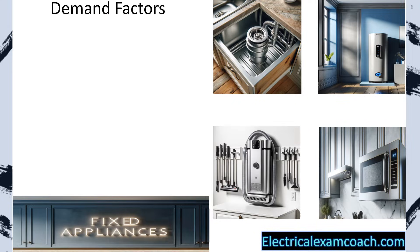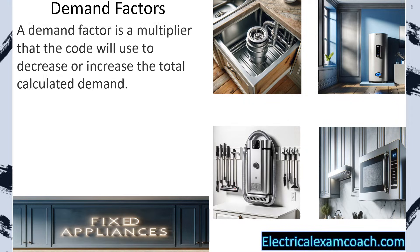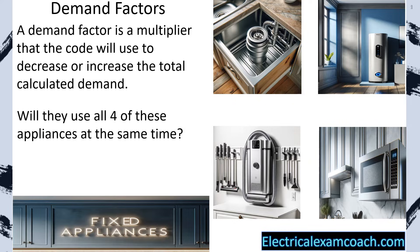Before we dive into the calculations, let's learn about demand factors — we're going to be using them for the rest of the program. A demand factor is a multiplier that the code will use to decrease or increase the total calculated demand. The question is, will they use all four appliances at the same time? The answer is no. So the code makers have made it so we can reduce the overall demand. Instead of counting them watt for watt, they've made multipliers that allow us to reduce the demand we calculate. And remember, if we have less amps, we could have a smaller service, smaller pipes, smaller wire, and a smaller overall cost of the job.